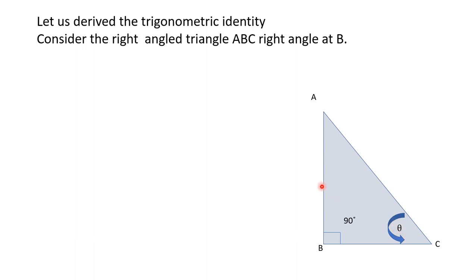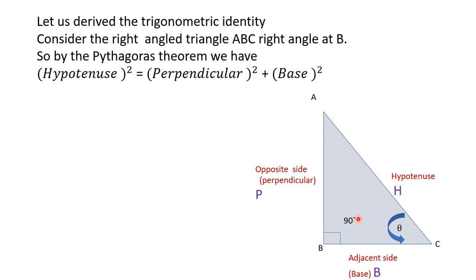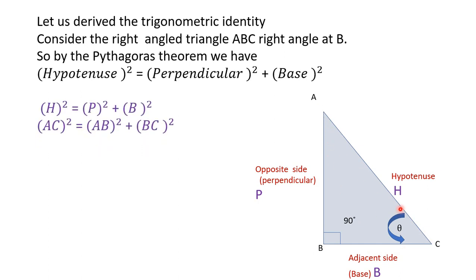Let us take the acute angle C as angle theta. The side opposite to this acute angle is AB, known as the opposite side or perpendicular (P). The side opposite to the 90° angle is the hypotenuse (H), and the side adjacent to the acute angle is known as the adjacent side or base (B). By the Pythagorean theorem, hypotenuse² = perpendicular² + base².